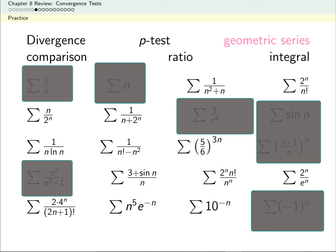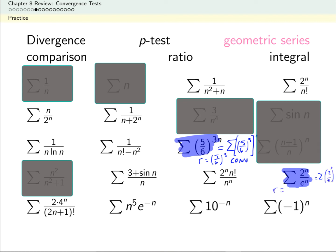Now pause the video, pick out the geometric series, and decide whether they converge or diverge. Some take a little simplification: one series can be rewritten as (5/6)³ to the power n, giving a common ratio of (5/6)³, so it converges. Similarly, 2^n / e^n = (2/e)^n; since e > 2 the ratio is less than 1, so it converges. Two other series are also geometric — one has r = 1/10 (converges) and another has r = −1 (diverges). A diverging geometric series also diverges by the divergence test.